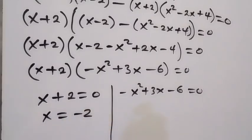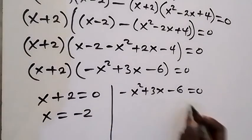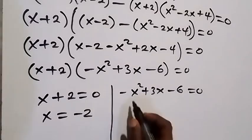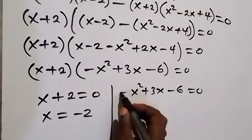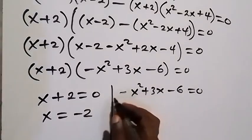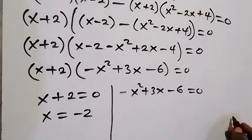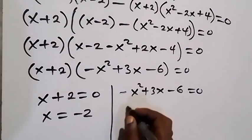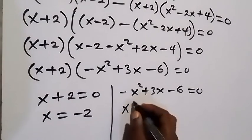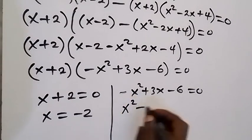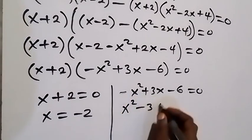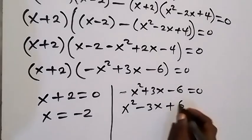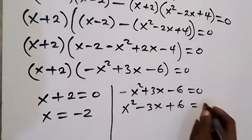From the second case, we solve for the other values of x. We have minus x squared plus 3x minus 6 equals zero. Let's multiply through by minus 1, and this becomes x squared minus 3x plus 6 equals zero.